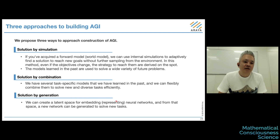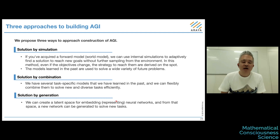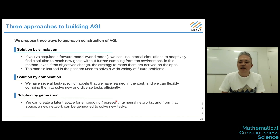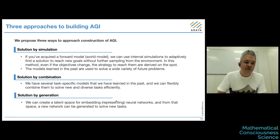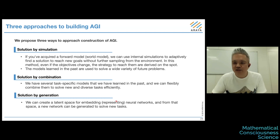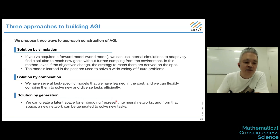We propose three possible ways to build artificial general intelligence. There may be many other ways, but these are relatively simple to think about and already exist in some form in the current AI literature. My claim is that each of these possible solutions to general intelligence has a relevant theory of consciousness — that's how I want to connect intelligence and consciousness.